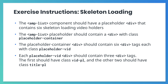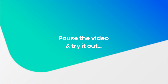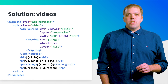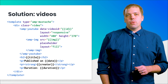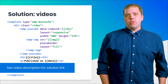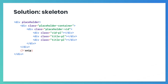Now pause the video and try this out. When you're done, the code for your mustache template should look like the HTML on your screen. The solution is also available at the link in your video description. In this sample, we're only showing you one of the six identical skeleton loading containers.